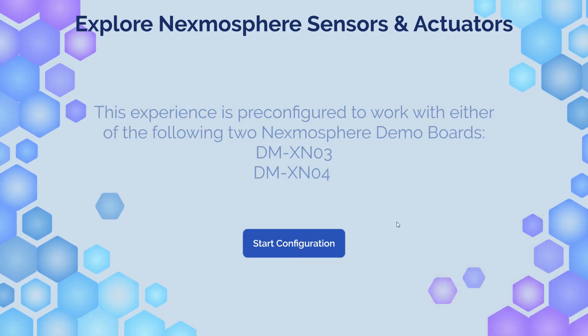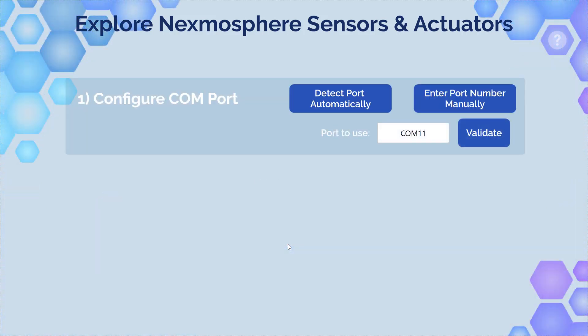Once this is done, in your Composer download the sample in the marketplace, just run in play mode and see how it goes. We will start the configuration now, which hopefully should be pretty automatic. We try to detect the port automatically based on the name Prolific — it found COM 11 on my machine.